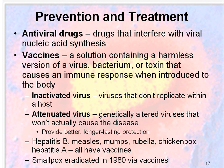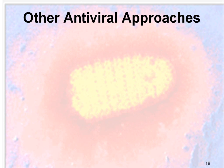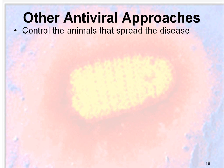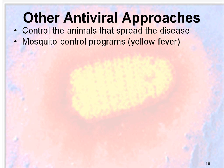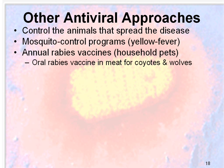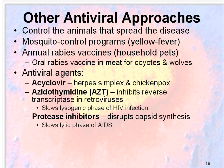Hepatitis B, measles, mumps, rubella, chickenpox, and hepatitis A all have vaccines. In fact, in 1980 we eradicated smallpox with vaccinations. Other approaches to treating virus infections include controlling the animals that spread the disease. There are mosquito control programs or vector control programs to limit problems such as yellow fever. Getting annual rabies vaccines on your household pets is important. In some cases, coyotes and wolves are even being treated orally with a rabies vaccine in meat to prevent them from spreading it to our household pets.